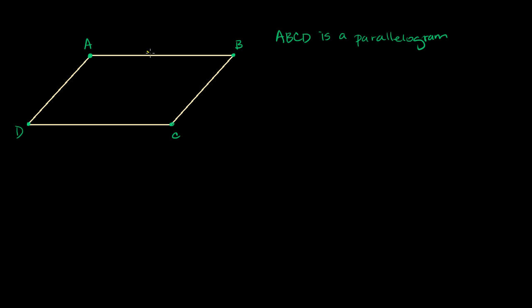We know the opposite sides are parallel — that side is parallel to that side, and this side is parallel to this side. We also know that opposite sides are congruent, so this length is equal to this length, and this length is equal to this length over here.